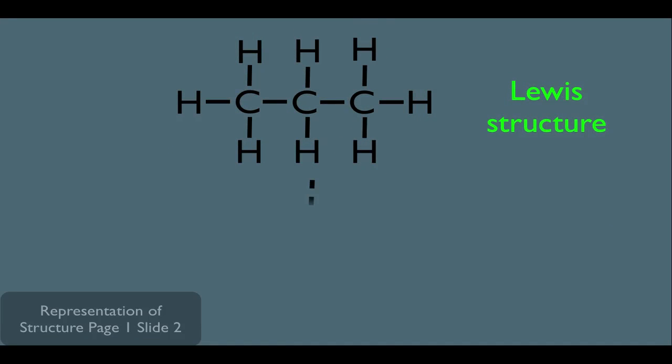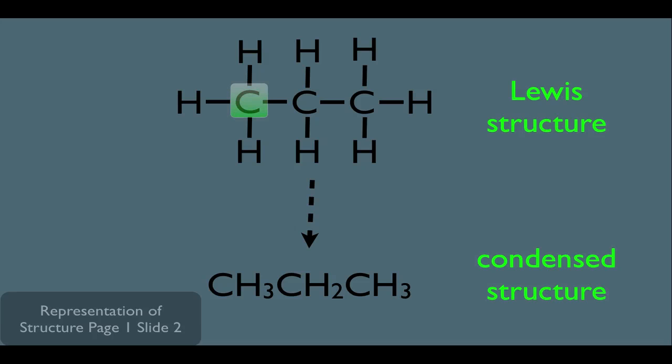Let's say you have this Lewis dot structure right here. Its condensed representation would look like this right here. And make sure you see the connections here. This carbon right here is this carbon here. And that top carbon has three hydrogens directly connected.